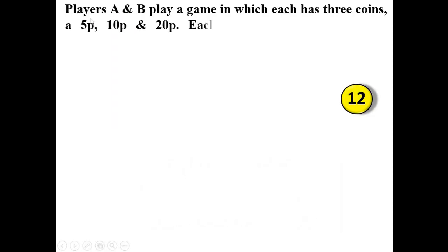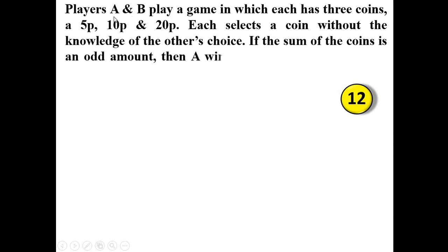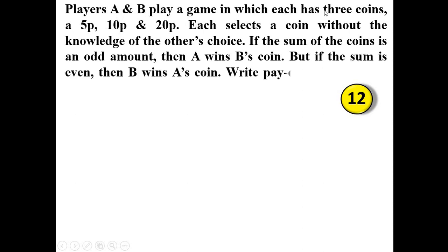In this example, players A and B play a two-player game in which each has three coins: 5 paise, 10 paise, and 20 paise. Each selects a coin without knowledge of the other's choice. If the sum of the coins is an odd amount, then A wins B's coin; if the sum is even, then B wins A's coin. Write the payoff matrix of the given game.